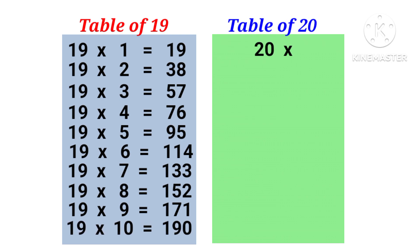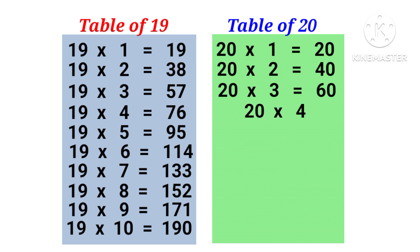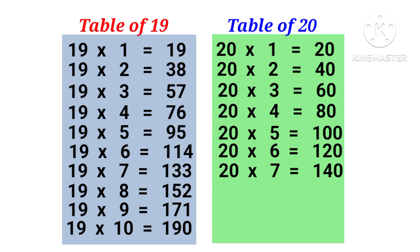20 1s are 20, 20 2s are 40, 20 3s are 60, 20 4s are 80, 20 5s are 100, 20 6s are 120, 20 7s are 140, 20 8s are 160, 20 9s are 180, 20 10s are 200.